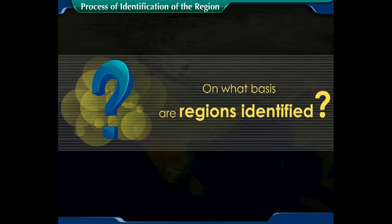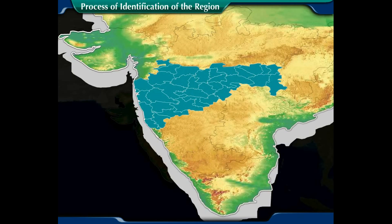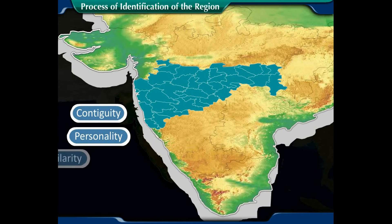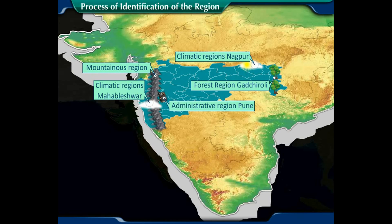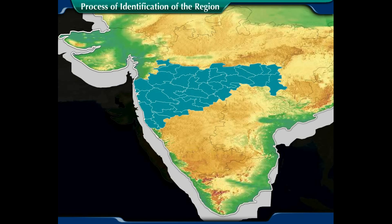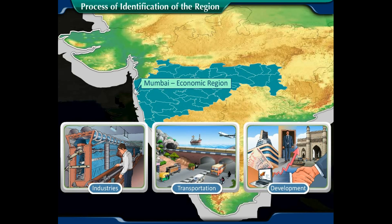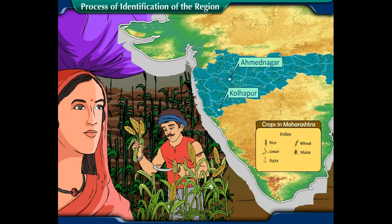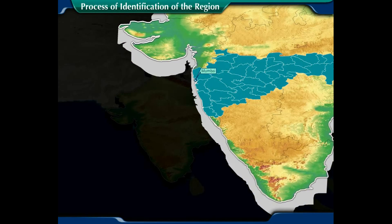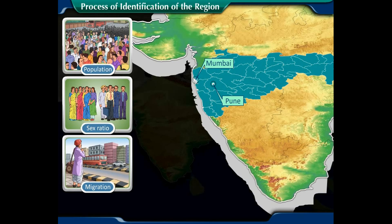On what basis are regions identified? Number one, on the basis of common characteristics such as contiguity, personality, and similarity — for example, mountainous regions, climatic regions, forest regions, and administrative regions. Number two, on the basis of one or multiple factors, like economic regions based on industries, transportation, and levels of development. Number three, agricultural regions formed according to crops and crop combinations. Number four, social and cultural regions identified on the basis of population, sex ratio, migration, and language.